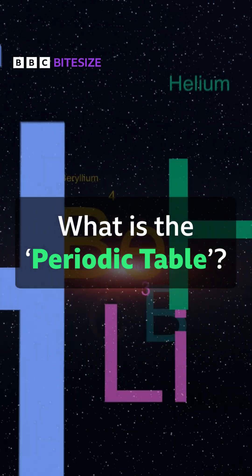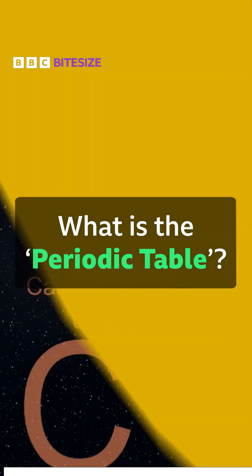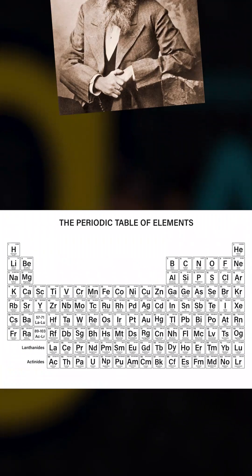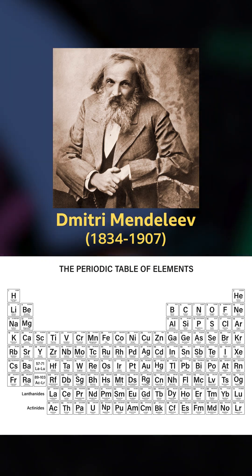And it took about 100 years of refining this order before we got to the periodic table that you see today. And this table is based on one made by a Russian scientist, Dmitry Mendeleev.